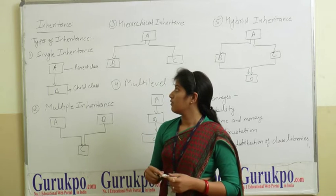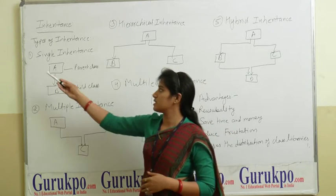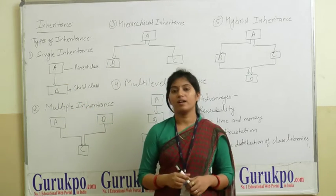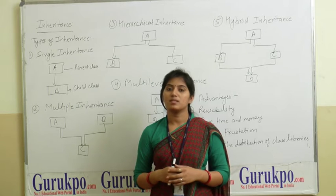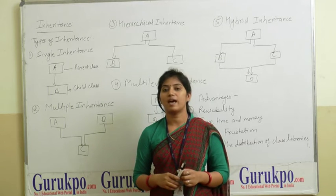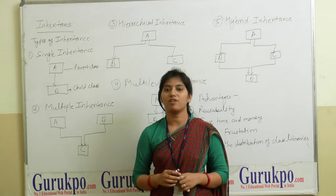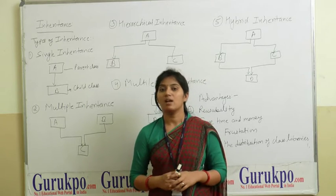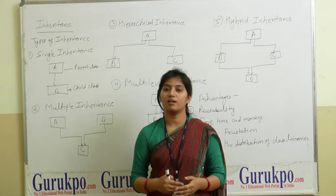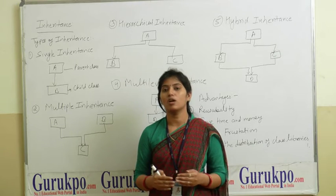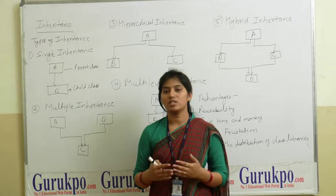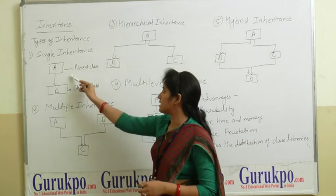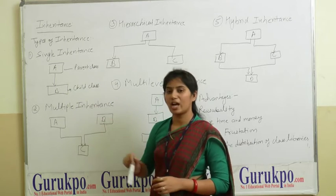There are five types of inheritance. The first one is single inheritance. In single inheritance, one class acquires another class's data members and functions. That means we inherit the properties and functions of class A. Class A is the parent class and class B is the child class. The class that inherits properties and functions is called the child class, and the class from which they are acquired is called the parent class.